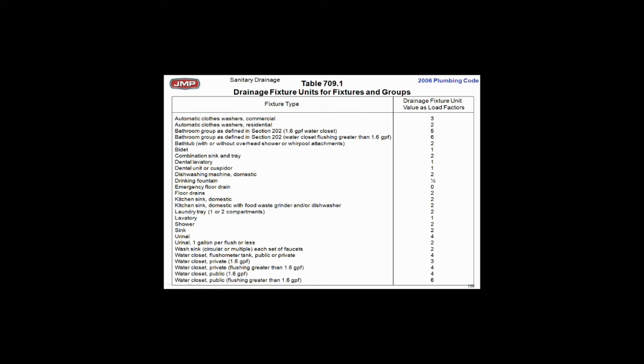This is a drainage fixture unit. Make sure you understand the word. This is drainage. This is not the supply side. This is the drainage fixture count that the code says you shall use and it works the same way as the fixture count on the supply side. In fact, some of the numbers are very simple.